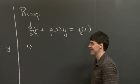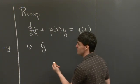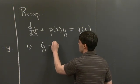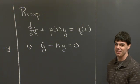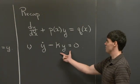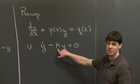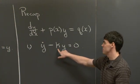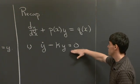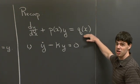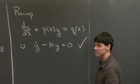Let's tackle part a. y-dot plus ky equals 0, or equivalently y-dot equals negative ky. Note that k is a constant, which is just a constant function of time, and the right-hand side is 0. So this equation has the same form as our general first order linear equation — it is a linear equation.